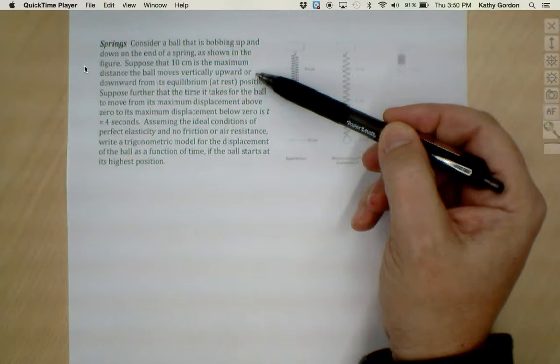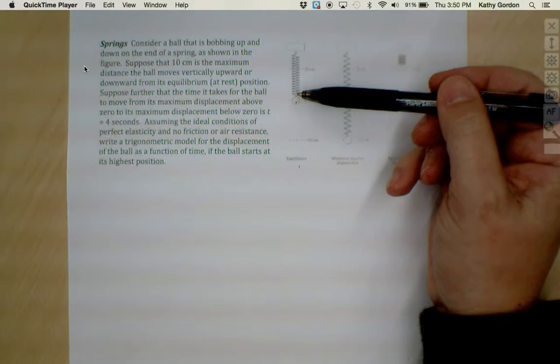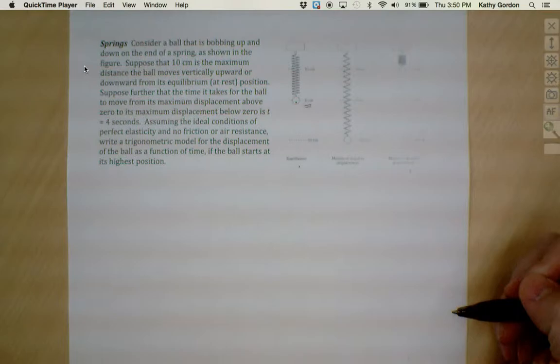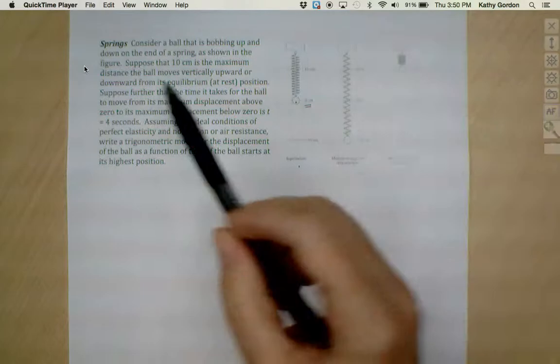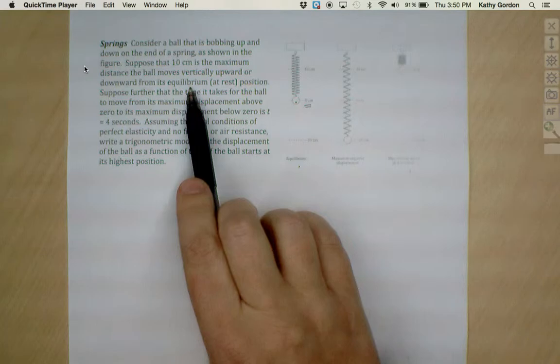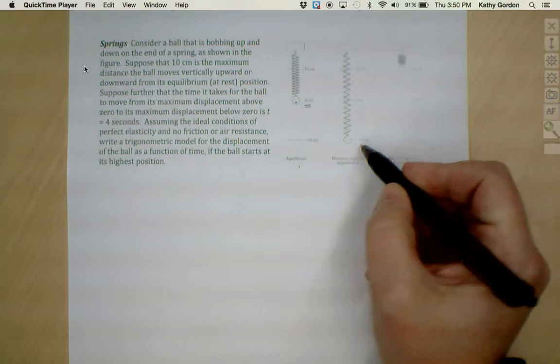It says to consider a ball that is bobbing up and down on the end of a spring as shown in the figure. Here, we're calling this equilibrium because the ball is not bouncing at this point. So when it's just sitting there, hanging there, it's not bouncing, it's not moving, we call that equilibrium. And notice, we're also calling that zero centimeters.